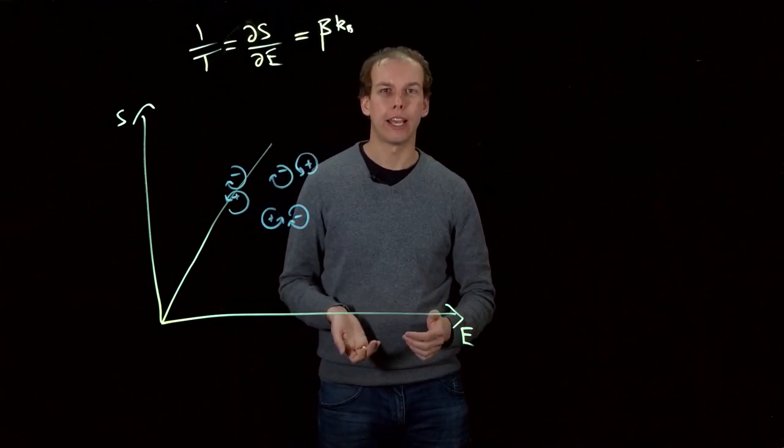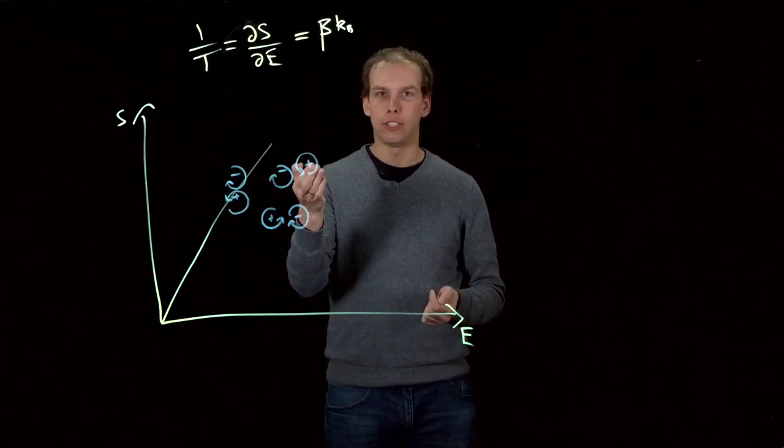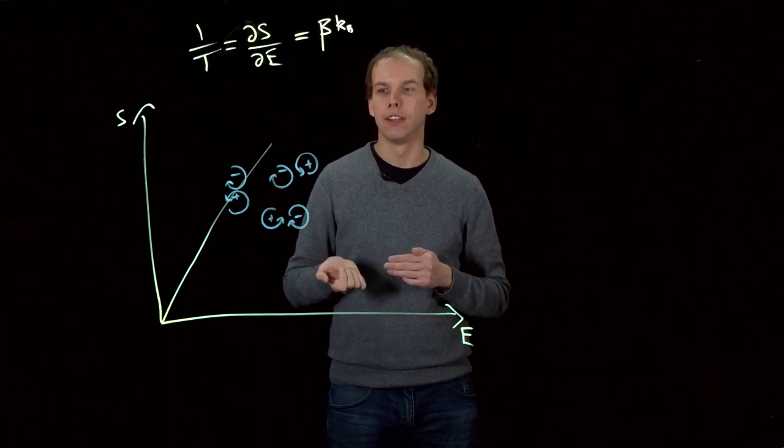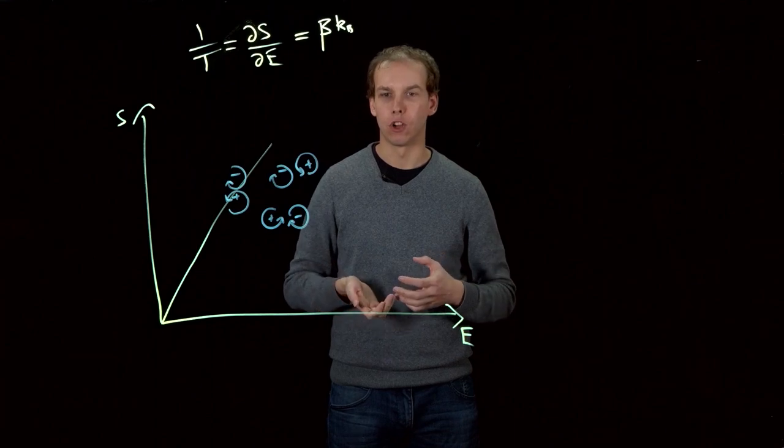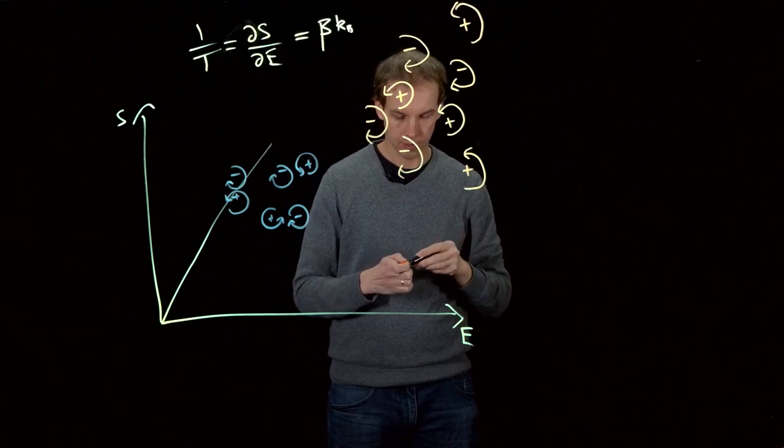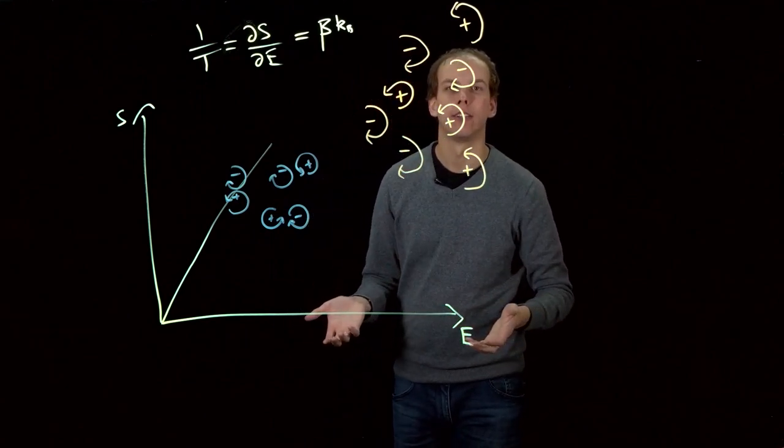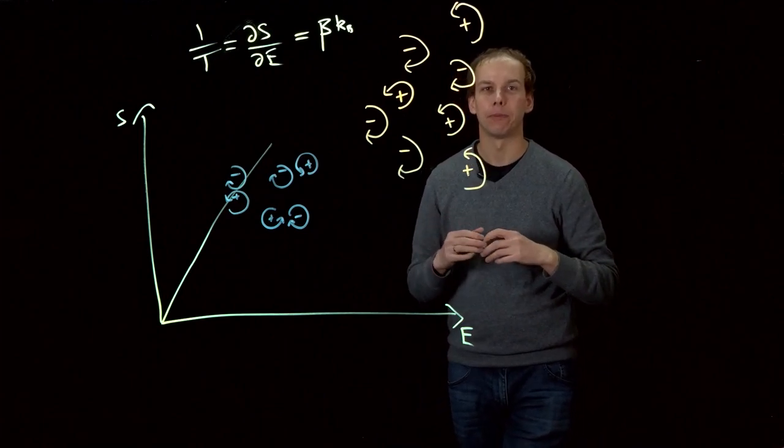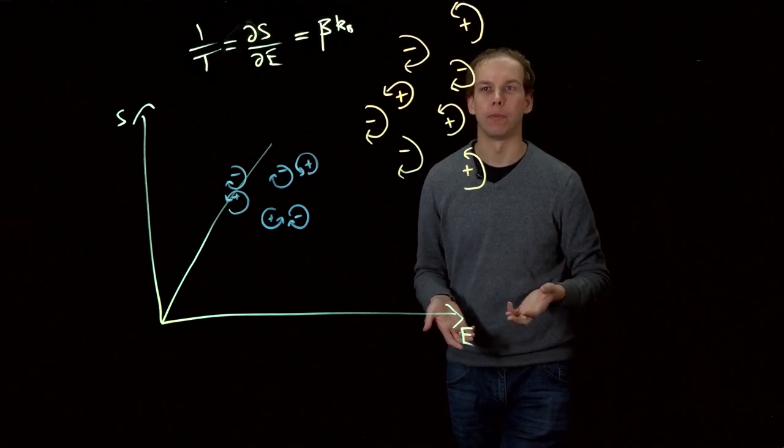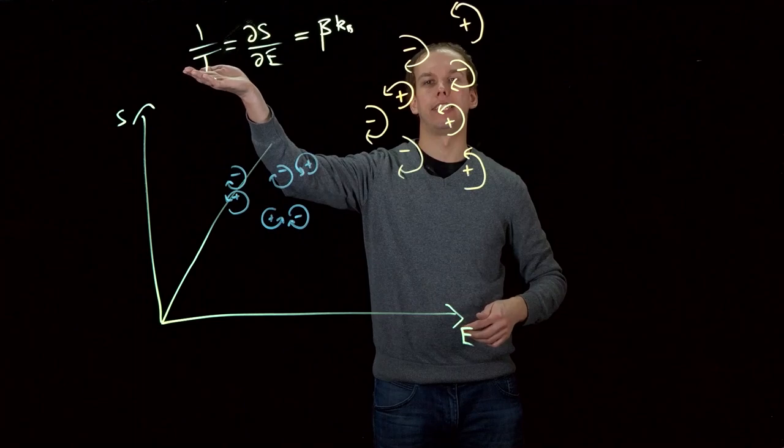As we add more energy into the system, that's going to correspond to these vortices and anti-vortices, or vortices that spin in the opposite direction, separating out and not canceling each other out as perfectly. As these vortices separate out, the flow field becomes stronger, but also the arrangement of the vortices starts to become more and more random. As well as increasing our energy, we've also increased entropy.